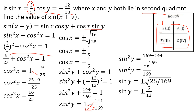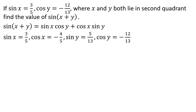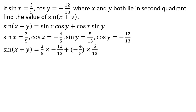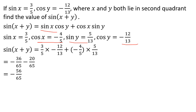In the second quadrant, sin is positive. So sin y equals 5/13. Summary of values: sin x equals 3/5, cos x equals minus 4/5, sin y equals 5/13, cos y equals minus 12/13. Now substituting: sin(x+y) = (3/5)(−12/13) + (−4/5)(5/13) = −36/65 − 20/65 = minus 56/65.